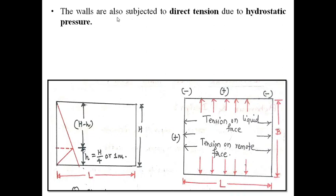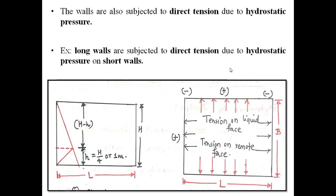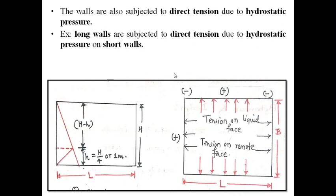Apart from this, the walls of the tanks are also subjected to direct tension due to hydrostatic pressure — because of the water pressure acting from inside, both short walls and long walls are subjected to it. The long walls are subjected to direct tension due to hydrostatic pressure on the short walls. Because of the water pressure from inside acting on the two short walls, tension is created in the two long walls.